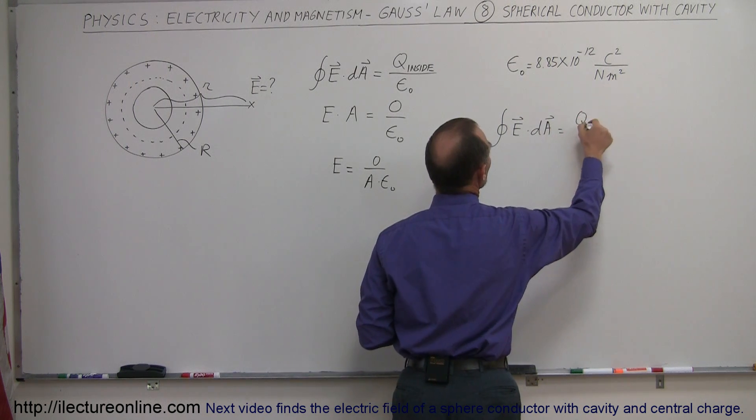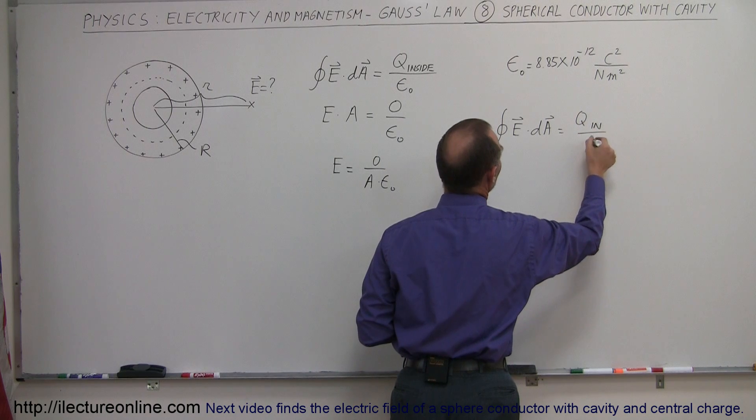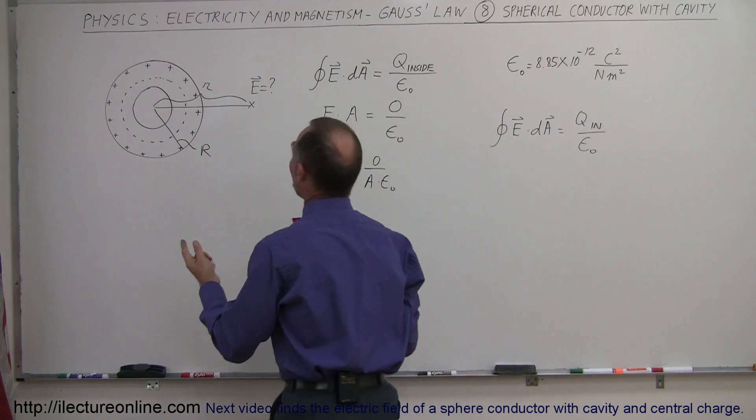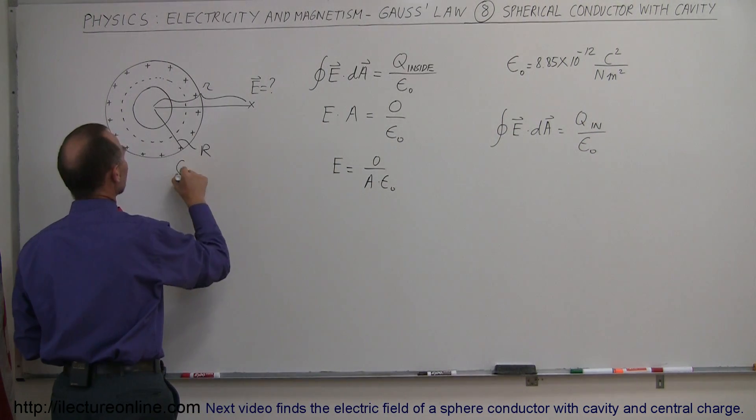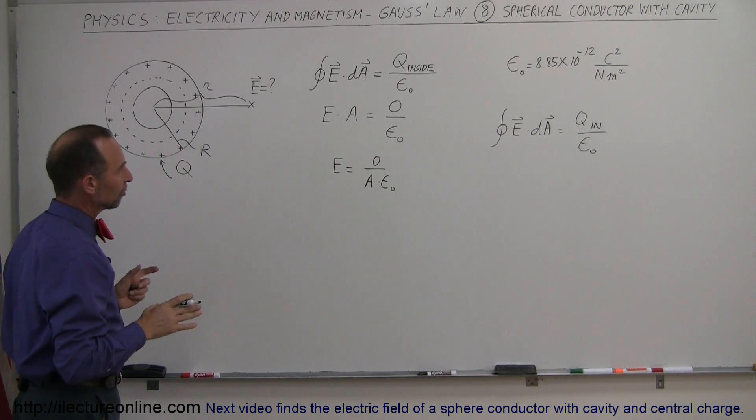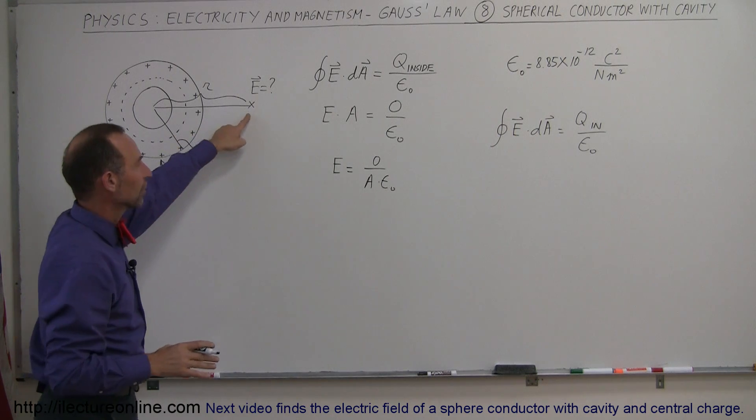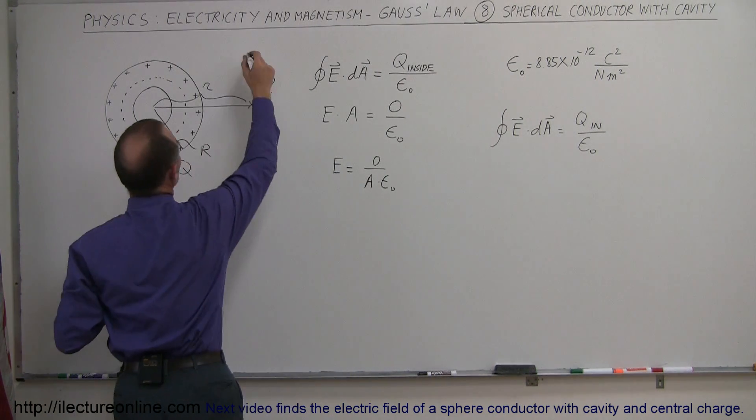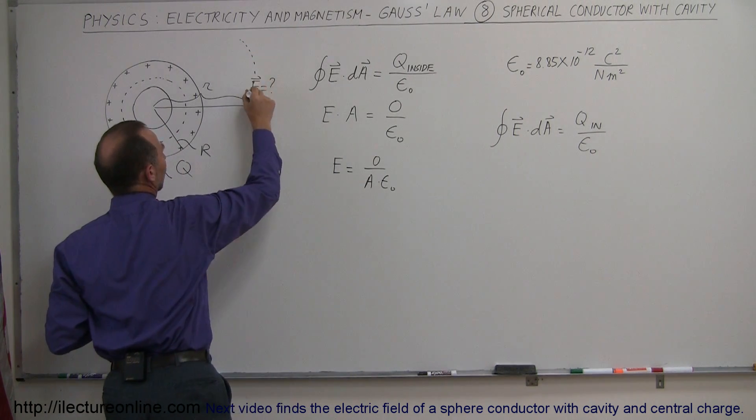This equals Q inside divided by epsilon naught. Let's just say for a moment that there's Q amount of charge on the surface of the conductor. Then the equation becomes as follows. The electric field strength at this point times the area of the Gaussian surface, which means we need a Gaussian surface right here.